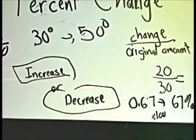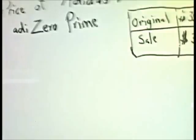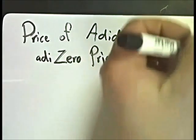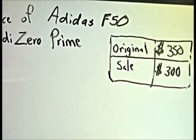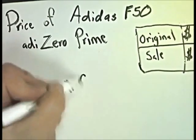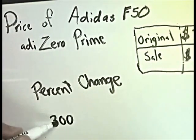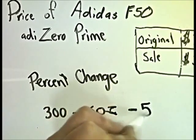We have two problems to do based on these issues. As I was searching online, I found that the price of the Adidas 5080 Zero Primes were originally $350 but are now down to $300 — what a nice savings for a pair of cleats. So let's figure out the percent change. The first thing I need to do is figure out the absolute change, or how much it actually changed. So I'm going to do 300 — the new sale price — minus 350, and you can see they went down $50.